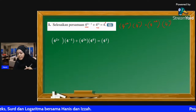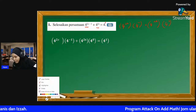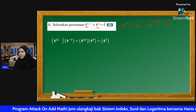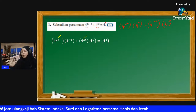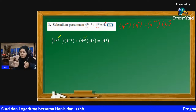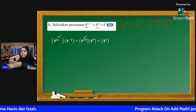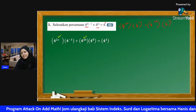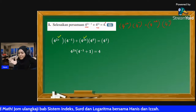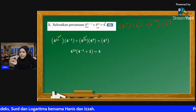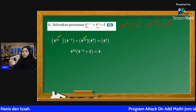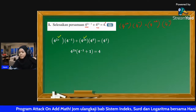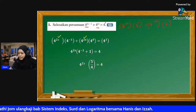Untuk tips soalan indeks - korang nampak ada dua benda yang sama, kita faktorkan. Benda yang sama kita letakkan dekat luar kurungan, dan benda yang tak sama kita masukkan dalam satu kurungan. So saya nak letak 4^(2x) dekat luar. 4^(-1) dengan 4^0 ada hubungan tambah. 4^0 sama dengan 1. So kita selesaikan dalam kurungan, dapat 5/4. Sekarang ni nak cari nilai X, jadi pindahkan 5/4 ke sebelah kanan, dapat 16/5.